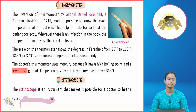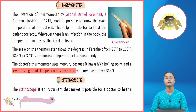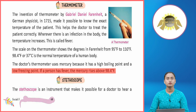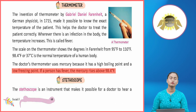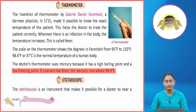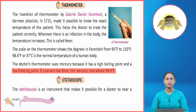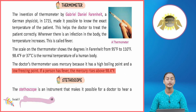In the current scenario, doctors use a thermometer with mercury — its boiling point is very high and freezing point is very low. If a person has fever, the mercury rises above 98.4 degrees Fahrenheit.